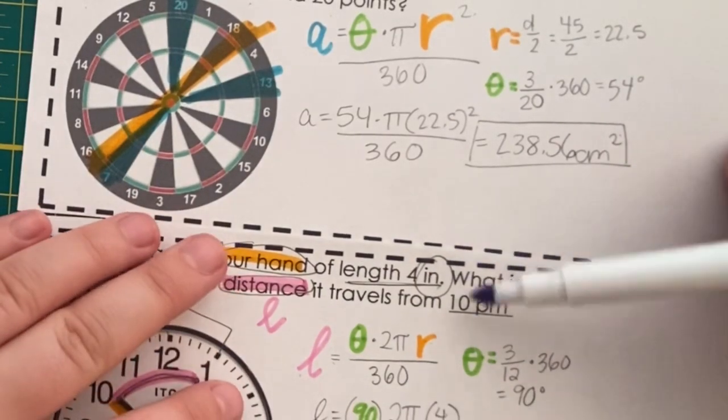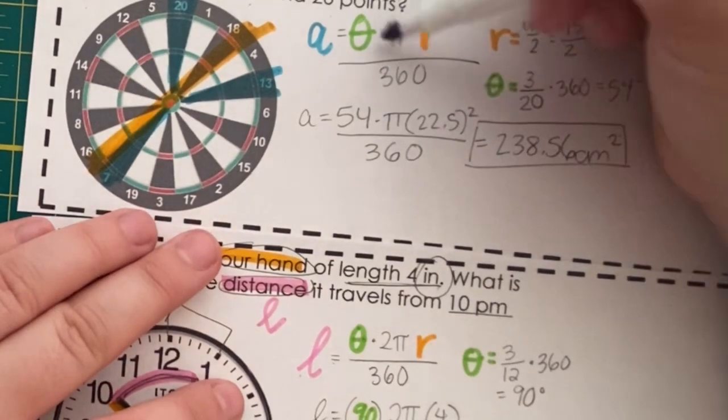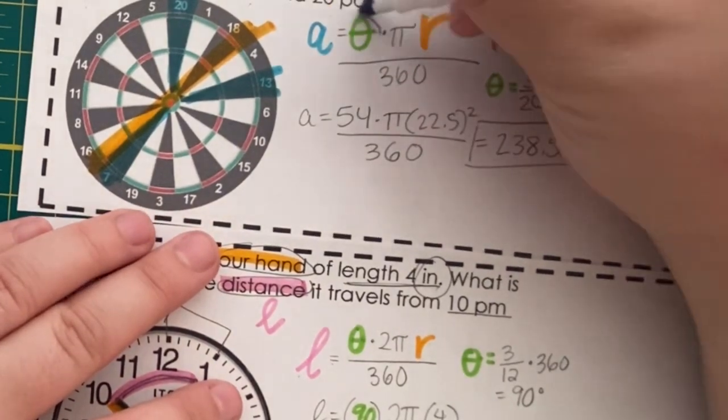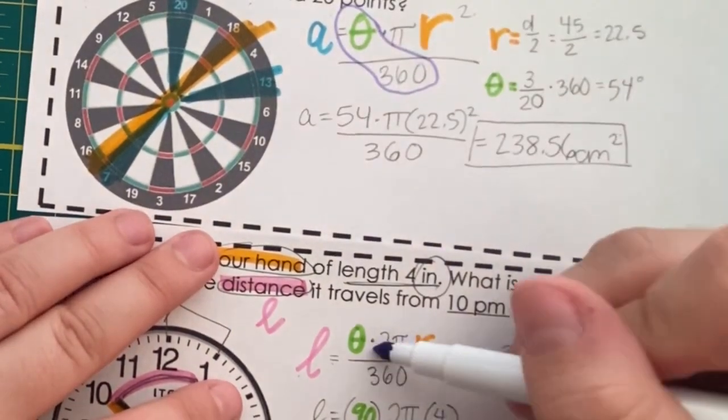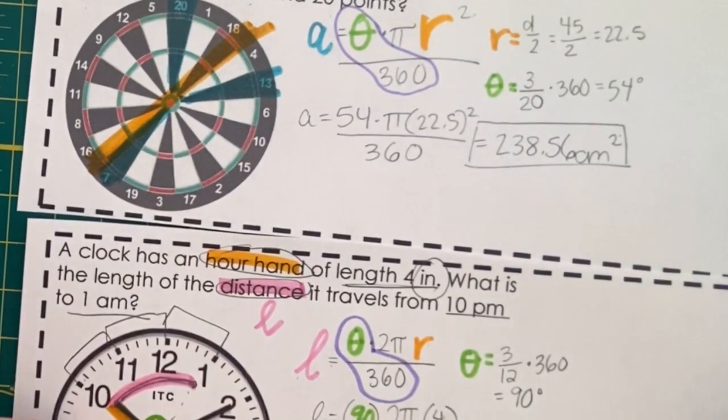Here's a little shortcut that will work with either of these. Theta over 360 is really just a ratio telling us how much of the circle we're taking up.